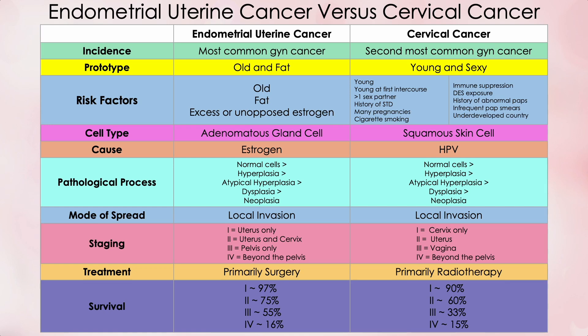Looking at the first factor — the incidence of the two cancers — endometrial uterine cancer is the most common gynecologic cancer, and cervical cancer is the second most common. Historically, cervical cancer was by far the more common of the two. Back before anyone knew what caused it, middle-aged women had cervical cancer diagnosed at very late stages with dismal prognoses. Before 1978, death from cervical cancer was common. But the two cancers have essentially traded places.